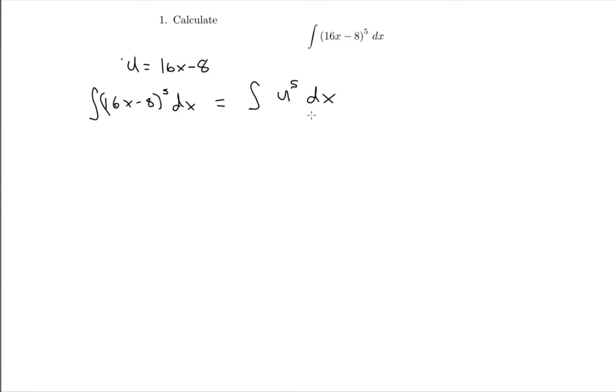So what we'd like to do is turn this whole integration into an integration with respect to u. We're going to figure out a way to get rid of this dx and turn it into a du. We can do that by a trick—by calculating the derivative of u with respect to x, which in this case, if you just take the derivative of u with respect to x, you get 16.